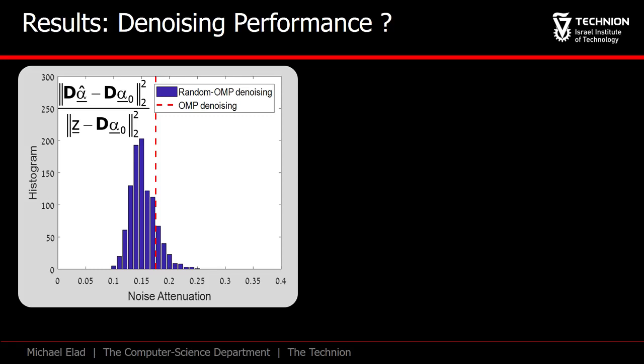This graph shows the noise attenuation factor, which is the ratio between the level of noise in the result and its level in the signal z. D times alpha zero is the true signal. Now, the smaller this ratio, the better the denoising effect.